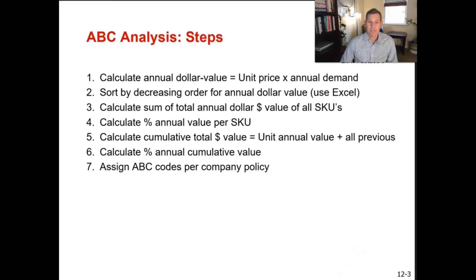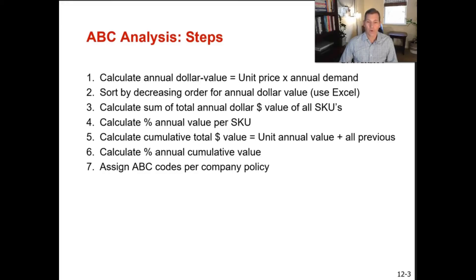Here are the steps to completing an ABC analysis. Step one: calculate the annual dollar value — unit price times annual demand. Step two: sort by decreasing order of annual dollar value. Step three: calculate the sum of total annual dollar value for all SKUs. Step four: calculate the percent annual total dollar value per SKU. Step five: calculate the cumulative total dollar value. Step six: calculate the percent annual cumulative value. Step seven: assign an ABC code per company policy.